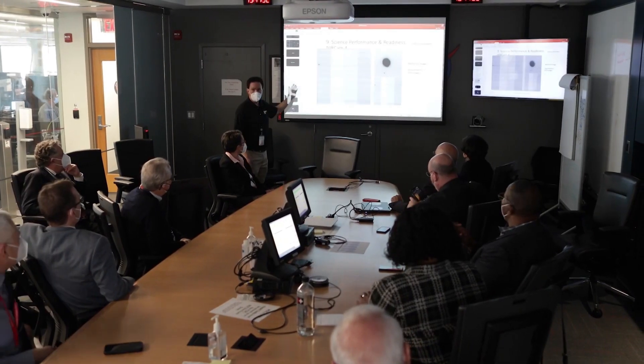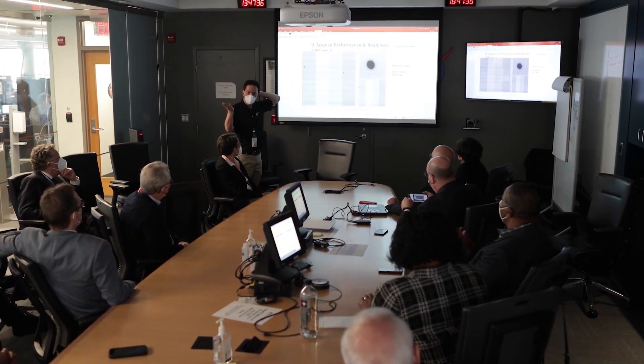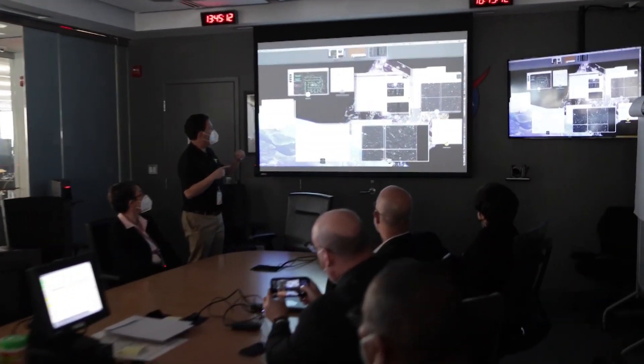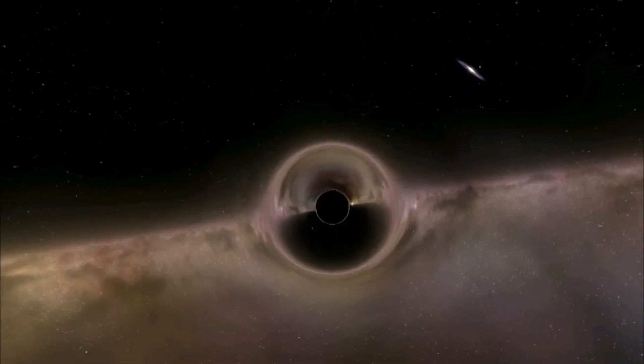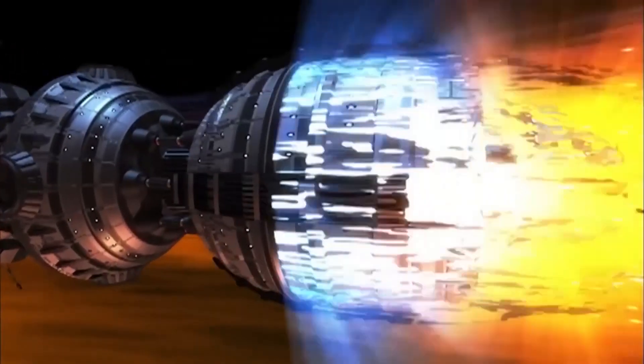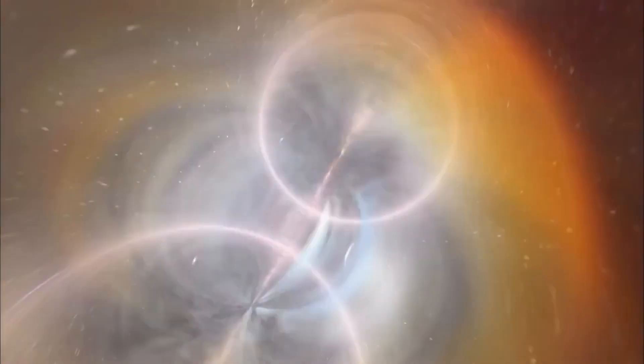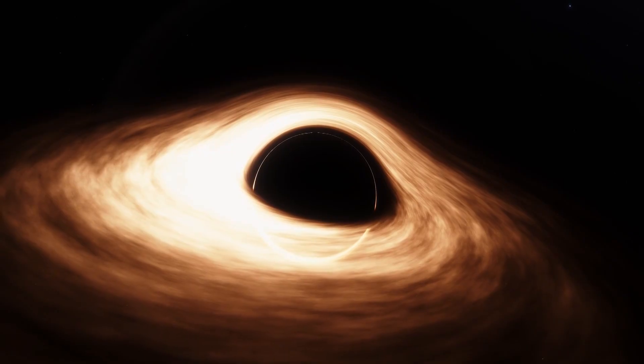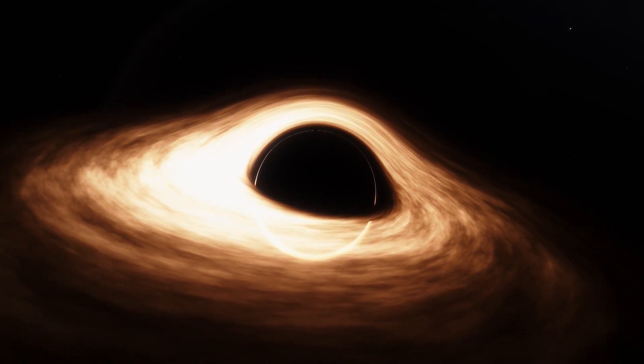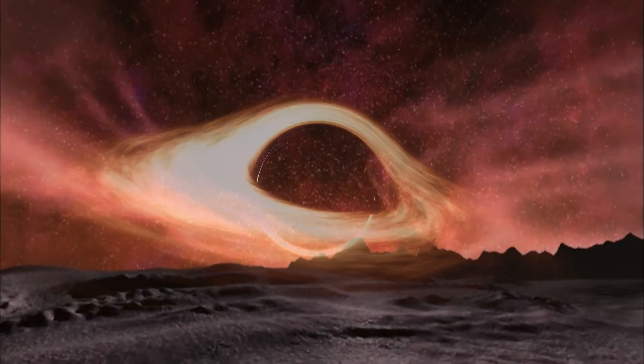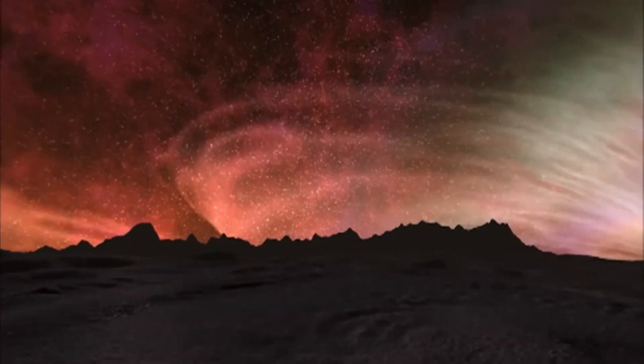The problem is that scientists cannot study black holes in the same way they study stars or other planets. They can't just look at the radiation they emit along with the dust and gas that surrounds them. They cannot send something like the Voyager probe into the interior of a black hole, since it would be crushed when it reached the singularity. Simply put, our only option is to study these massively powerful phenomena in space in two dimensions since we cannot get close to them.